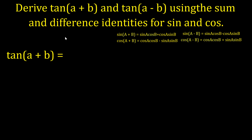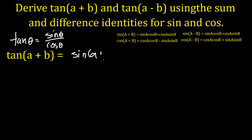So we've got these identities here, and what we're going to do is figure out what tangent of a plus b is. Tangent of any angle theta is sine of theta over cosine of theta. And so if we have tangent of an angle that is a plus b, we can do sine of a plus b over cosine of a plus b.